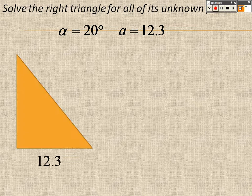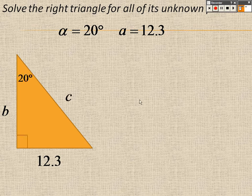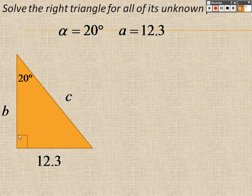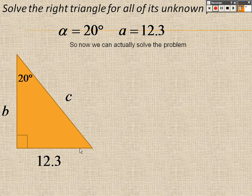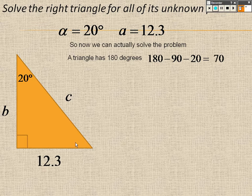Side a is 12.3, angle α is 20 degrees. I know this is 90, I don't know b, c, and I don't know this angle down here. Well, remember, a triangle has 180 degrees, so it's 180 minus 90 minus 20, and whatever's left over, which is 70 degrees, happens to be that angle down there.